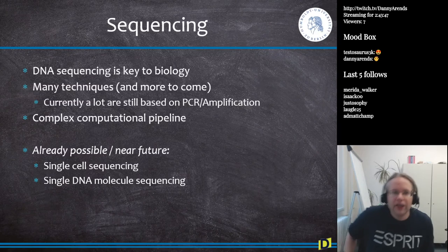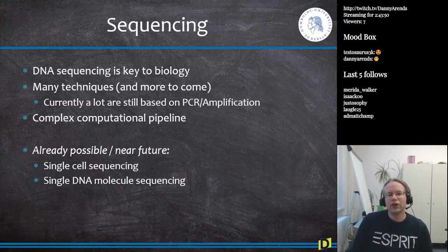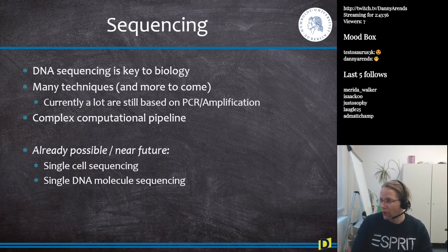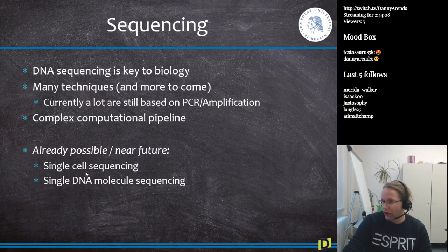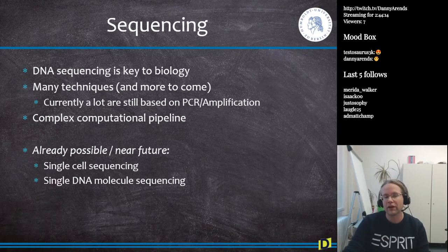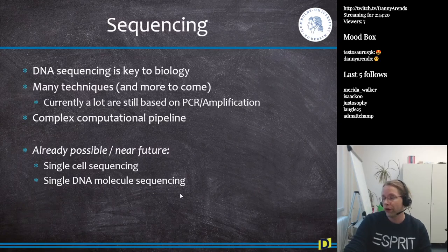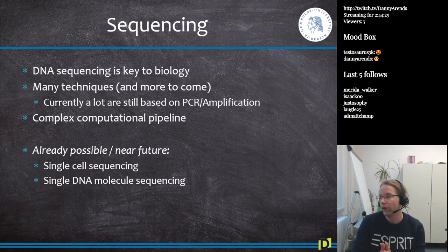DNA sequencing is key to biology. There are many techniques for sequencing and more are coming. Currently, many are based on PCR and DNA amplification. There is a complex computational pipeline required. In the near future, single-cell sequencing — sequencing only a single cell — is increasingly possible, and single-DNA molecule sequencing, where a single molecule of DNA is sequenced rather than a bulk of them simultaneously, is also becoming more feasible.